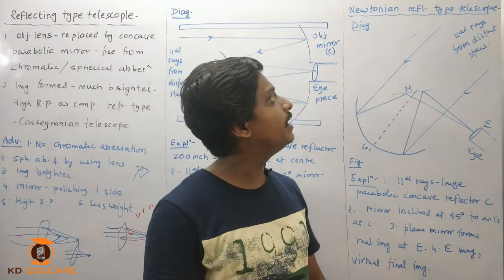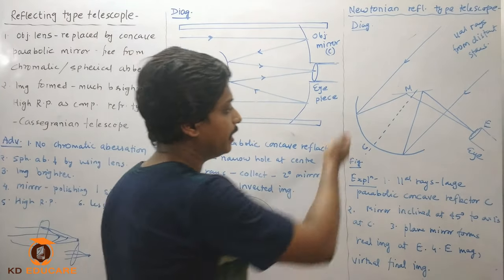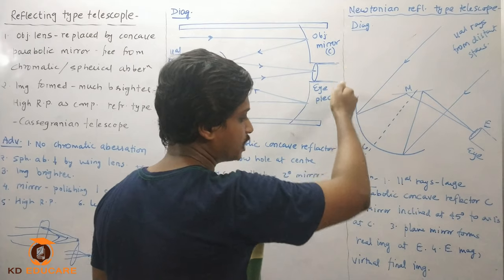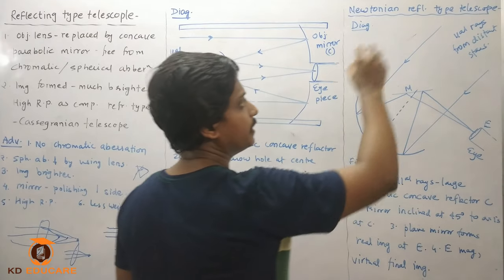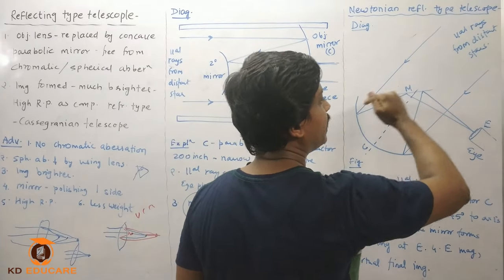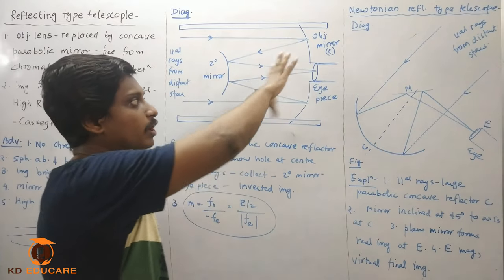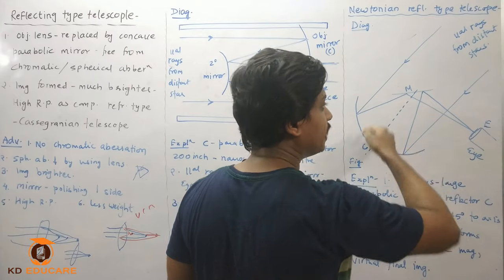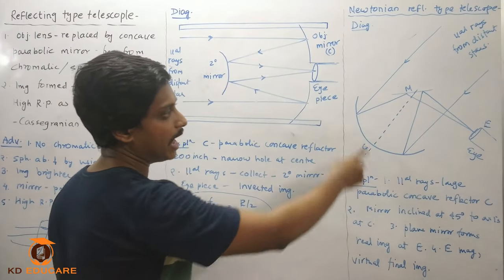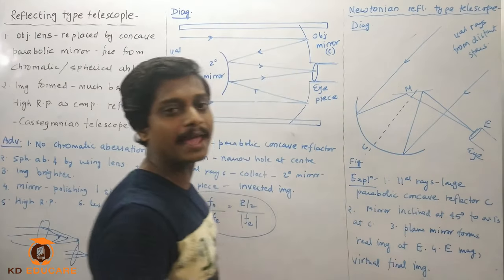Newton's is a reflection type telescope. A large parabolic concave reflector collects parallel rays, and a plane mirror is used. Two mirrors are used - one curved type and one plane mirror. The mirror is fixed at a 45 degree angle.